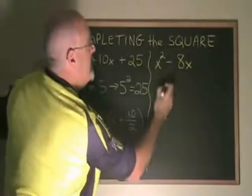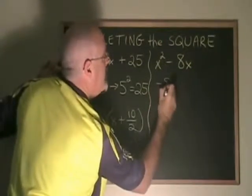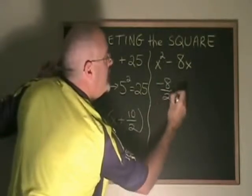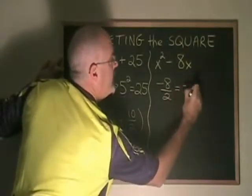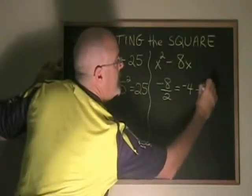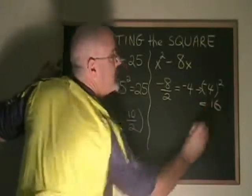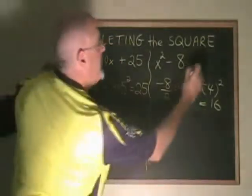I take the negative 8, which is my coefficient of x, and I divide it by 2, which gives me negative 4. If I square negative 4, I get positive 16, and that is the term that I write here, plus 16.